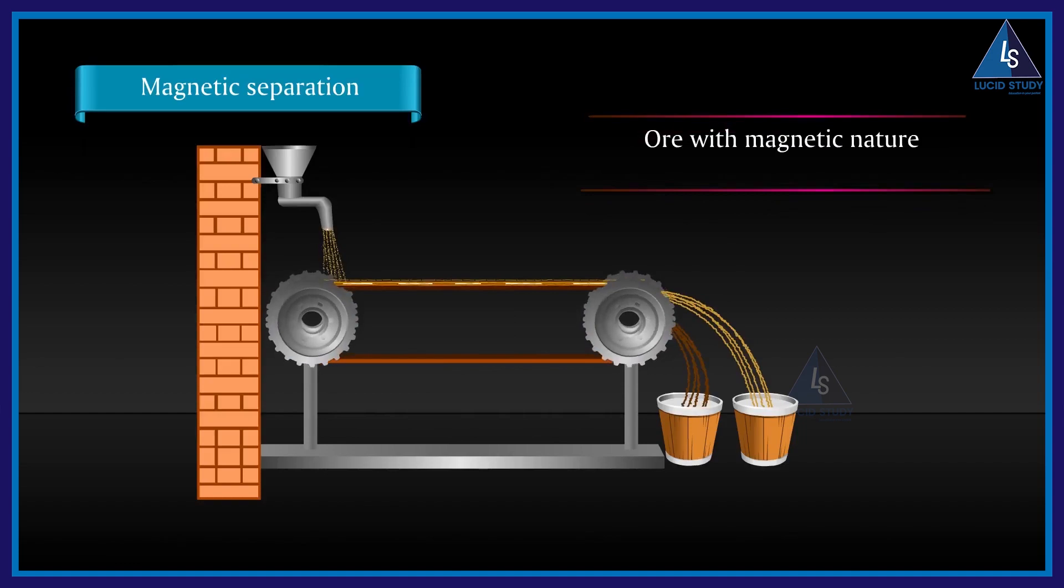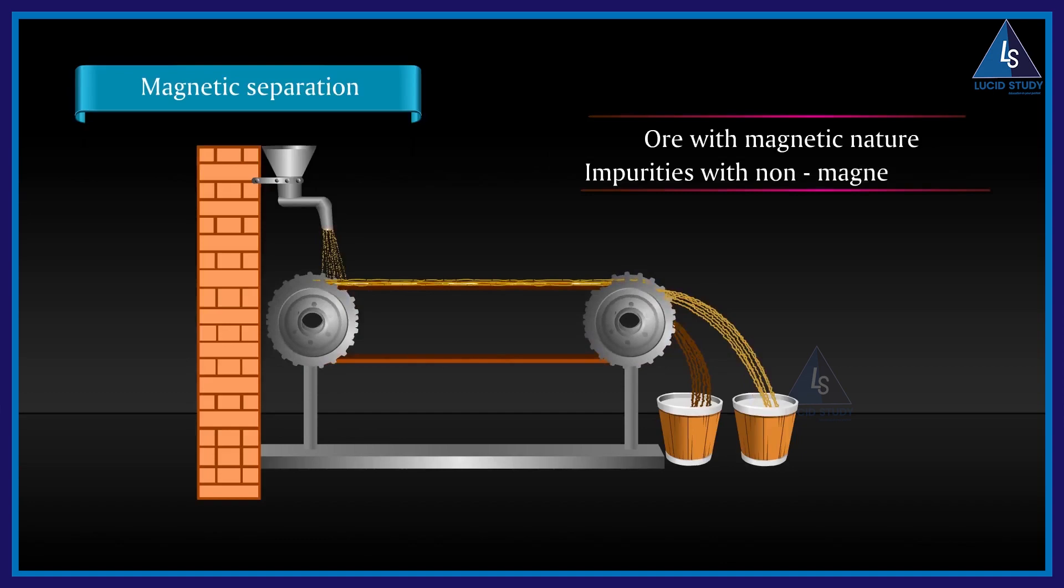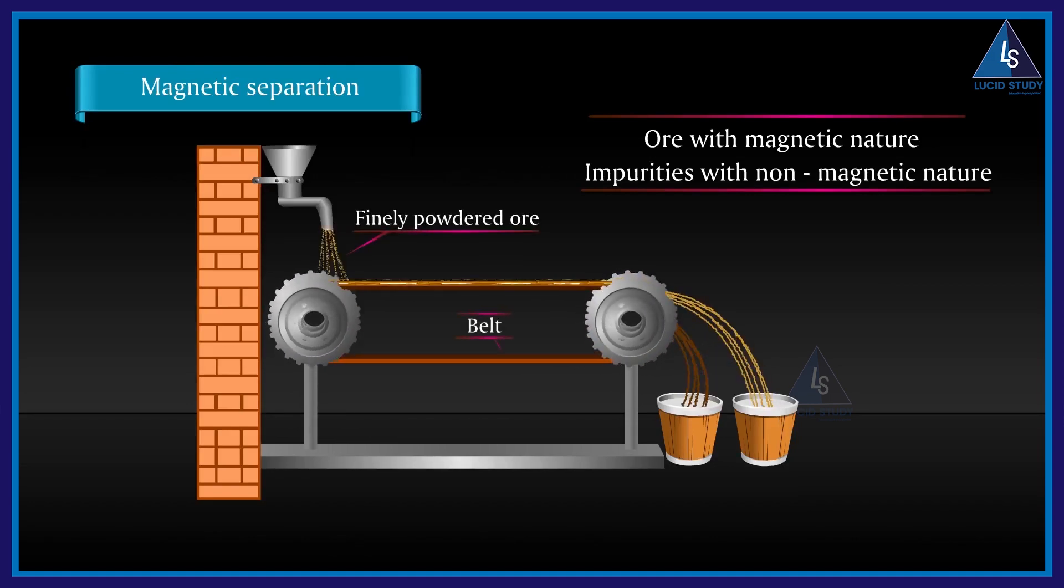In magnetic separation, two wheels are taken and the ore is powdered. It is kept on a moving belt. One is a magnetic wheel and this is a non-magnetic wheel.